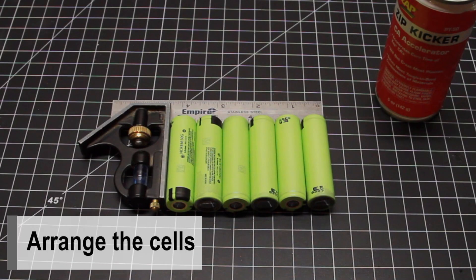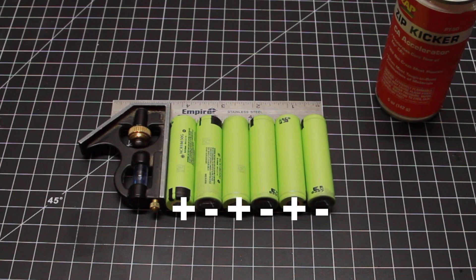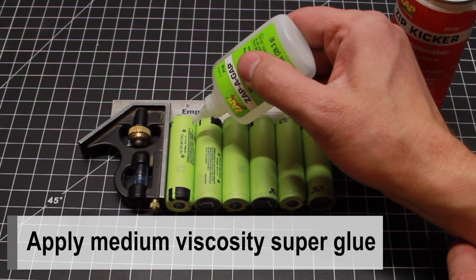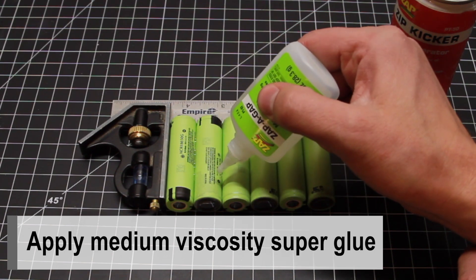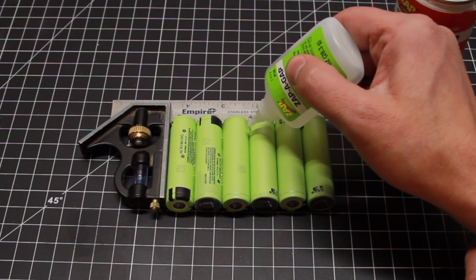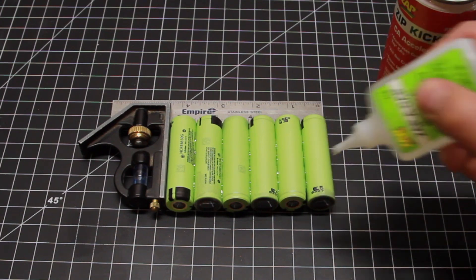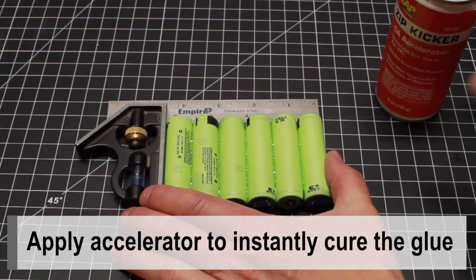Arrange the cells. Make sure they go positive to negative. Apply medium viscosity superglue. You don't have to do it this way, but this method works really well for me. Apply accelerator to instantly cure the glue.